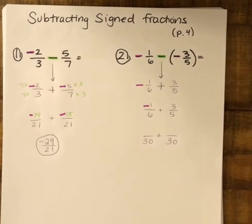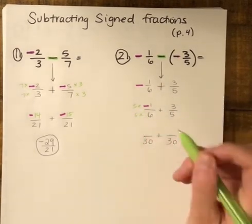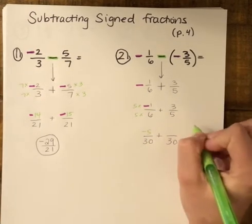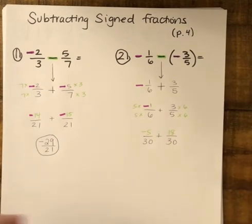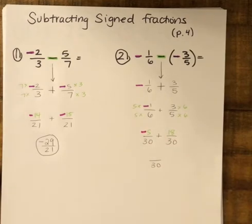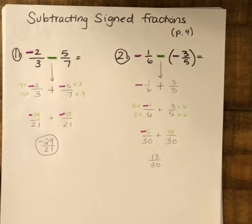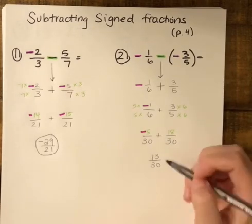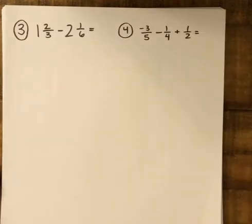I write a spot for the denominator 30 for both fractions and find equivalent fractions. For the first fraction, 6 times 5 gets to 30, so I multiply the top by 5: 5 times negative 1 is negative 5. For the second fraction, 5 times 6 gets to 30, so 3 times 6 is 18 on top. Now adding: negative 5 plus 18 — the positives win — gives 13, so the answer is 13 over 30. Since 13 is prime and 30 is not a multiple of 13, this fraction cannot be simplified.